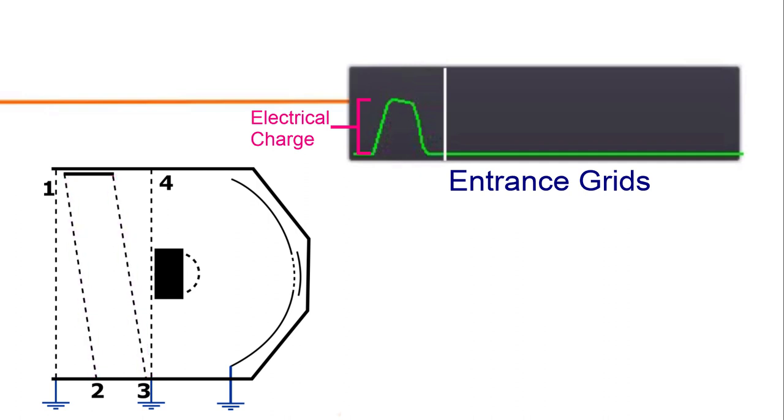The width of the waveform corresponds to the time the dust spent between the first and the fourth grid. Since the distance between these grids is known, the speed of the dust can be determined.